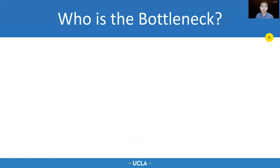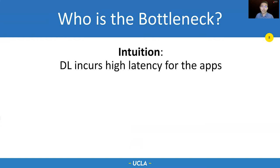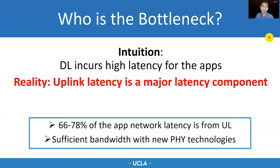With this methodology, we first find that intuition is not correct — downlink is not the major latency bottleneck. Actually, more than 66% of the application network latency is from uplink. This is because 4G has sufficient bandwidth to support VR applications. With the adoption of new technologies such as MIMO, carrier aggregation, and deployment of 5G, the throughput will be less and less problematic for mobile applications. As a result, our project focuses on the uplink latency.